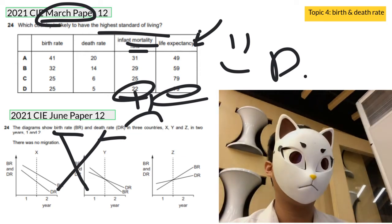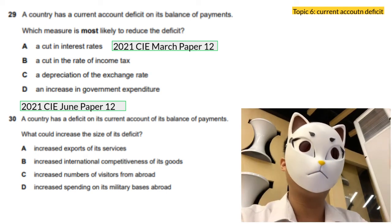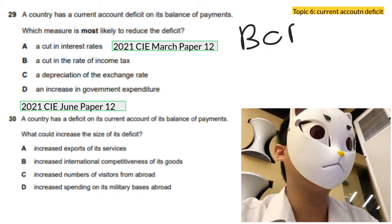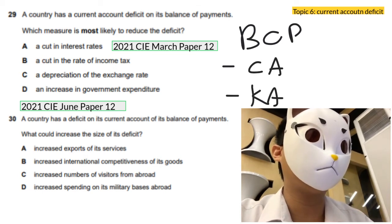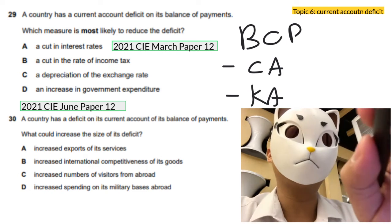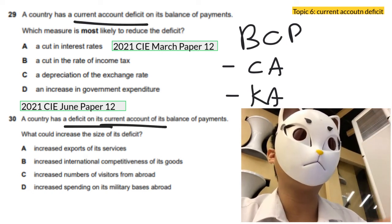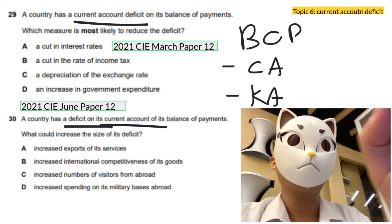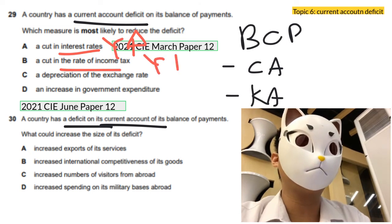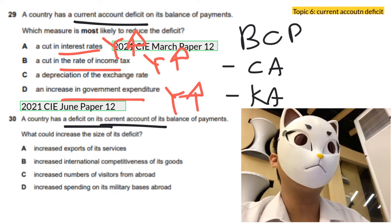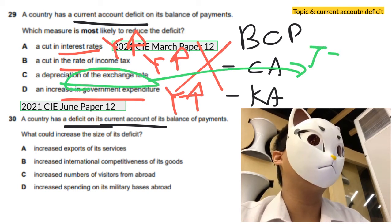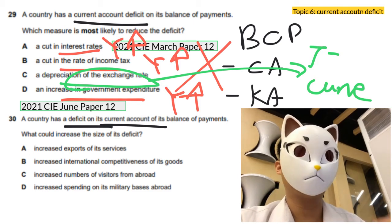The last multiple choice topic is the current account deficit. In the balance of payments there are current account, capital account, and other accounts, and recent exam trends always focus on the current account deficit and how to deal with it. For Question 29, options A, B, and D all involve increasing income, which is wrong. The answer goes to C, which relates to the J-curve and Marshall-Lerner conditions.